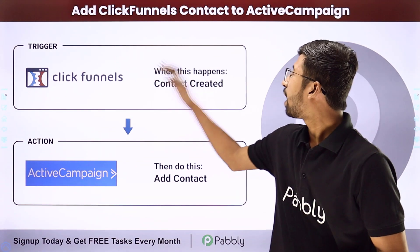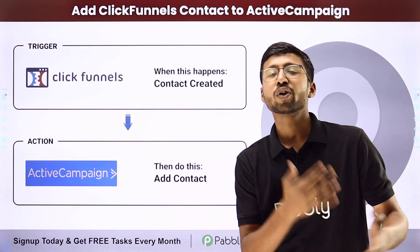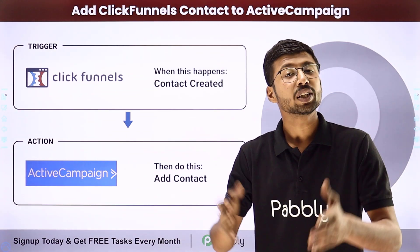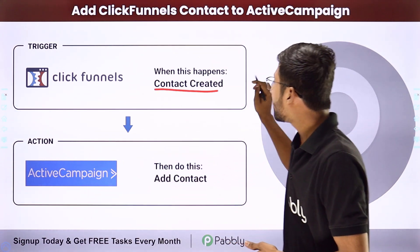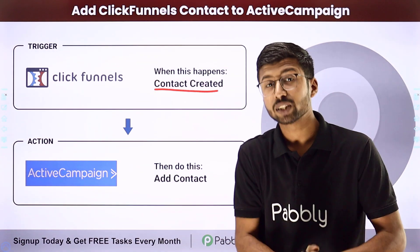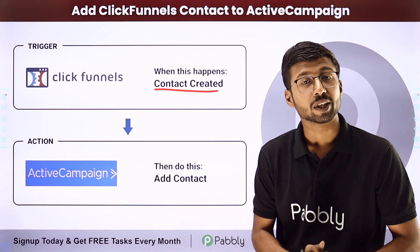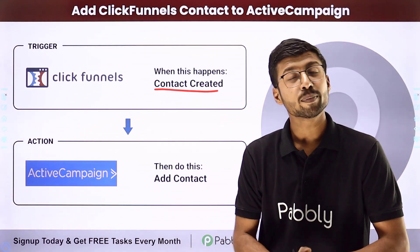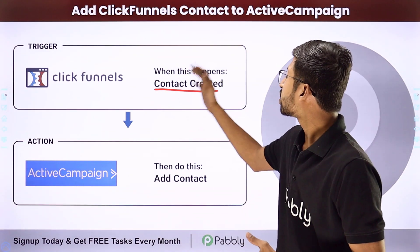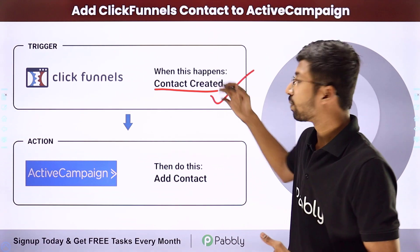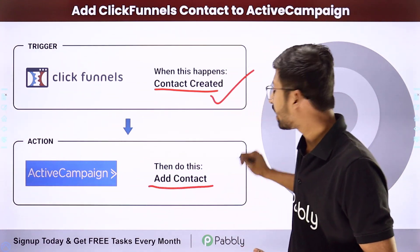In this video we are going to learn how to add ClickFunnels contacts to ActiveCampaign. Suppose you have created some kind of website or funnel using ClickFunnels, and you want that whenever a new contact is created in that funnel, you also want to add that same contact in ActiveCampaign. You can completely automate this process. The trigger of this automation will be the creation of a new contact in ClickFunnels, and the action will be adding those same contacts as a new contact in ActiveCampaign.